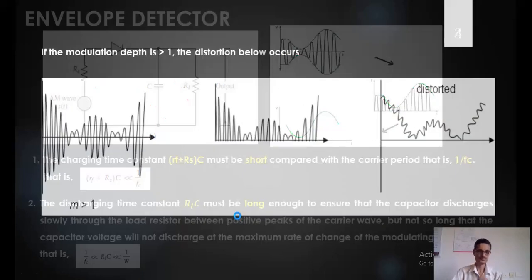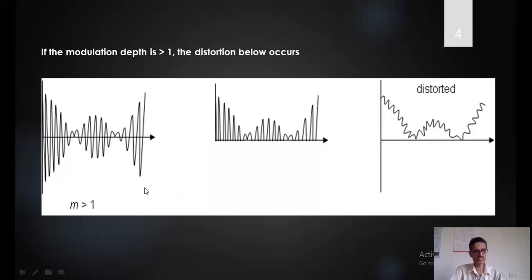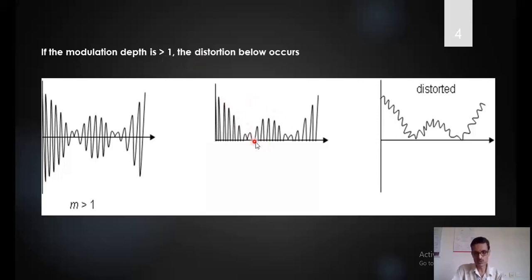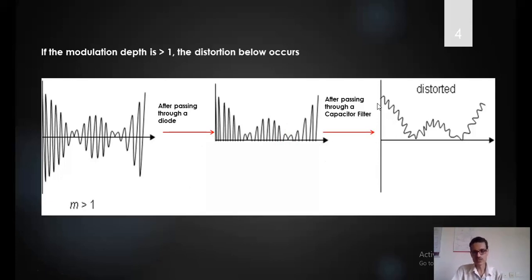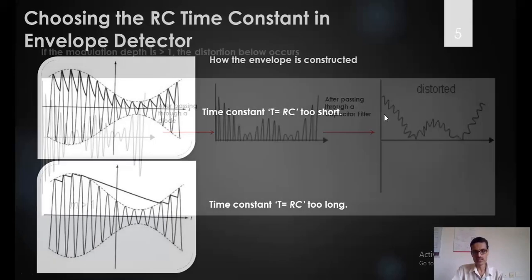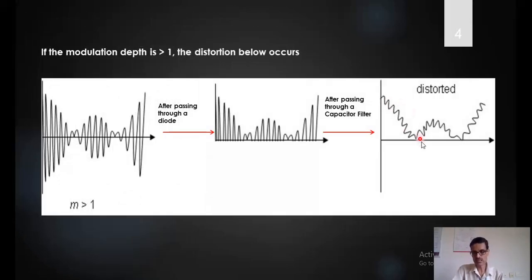Just look at this example. If the depth of modulation is more than 1, how will distortion result? This is a modulated signal where we have a phase reversal — some distortion is present. The depth of modulation is more than 1. This is the output of the diode and this is the output of the capacitor filter — a distorted kind of recovered message signal. The condition is that the modulation index or depth of modulation should be less than 1.